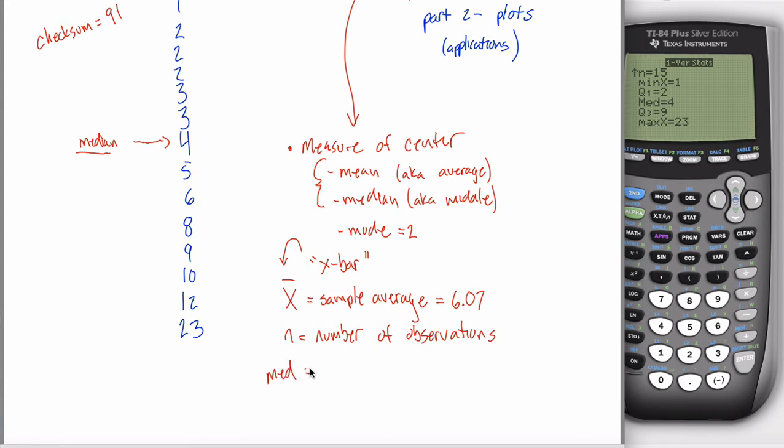There's no agreed upon symbol for what the median is. Some books use a capital M. Some use a lowercase m. Some differentiate between sample and population. Your calculator writes M-E-D. It won't matter too much in this class what symbol you use. You can write out the word median or M-E-D or whatever. The point is just if you calculate the median, it would be four.